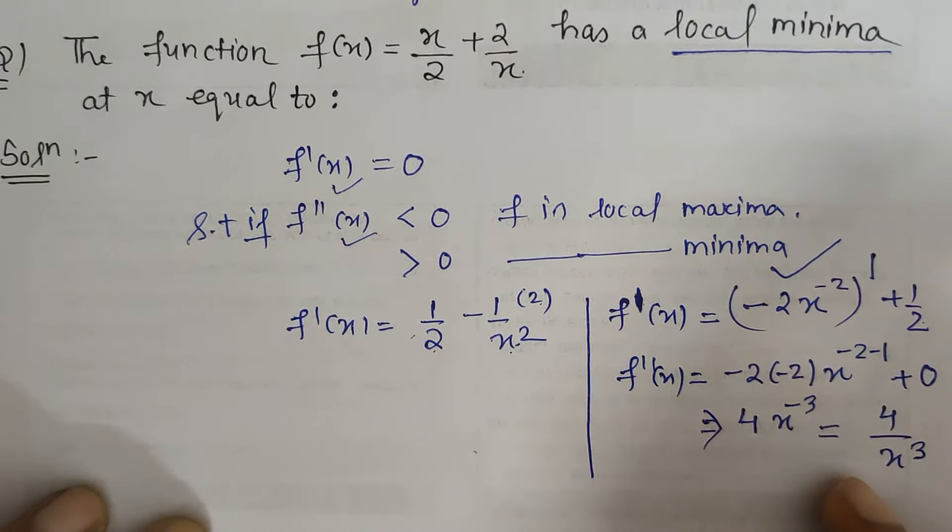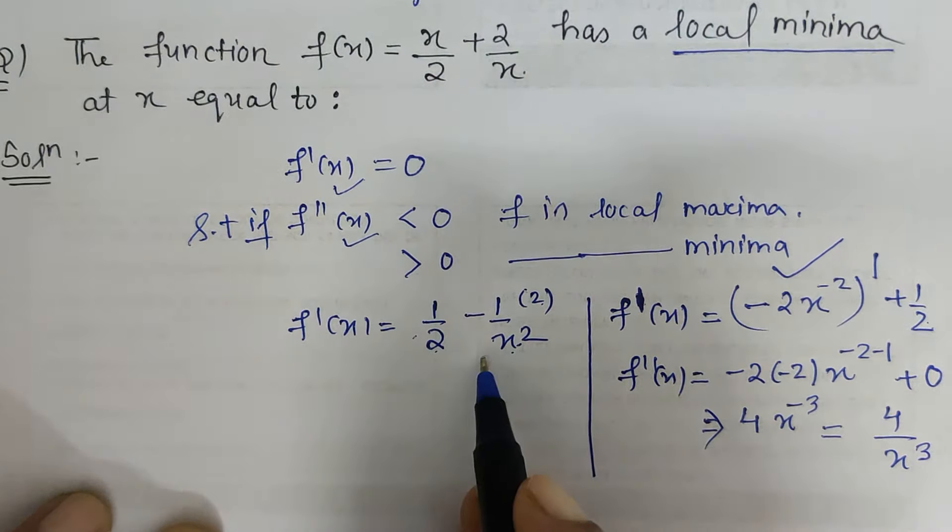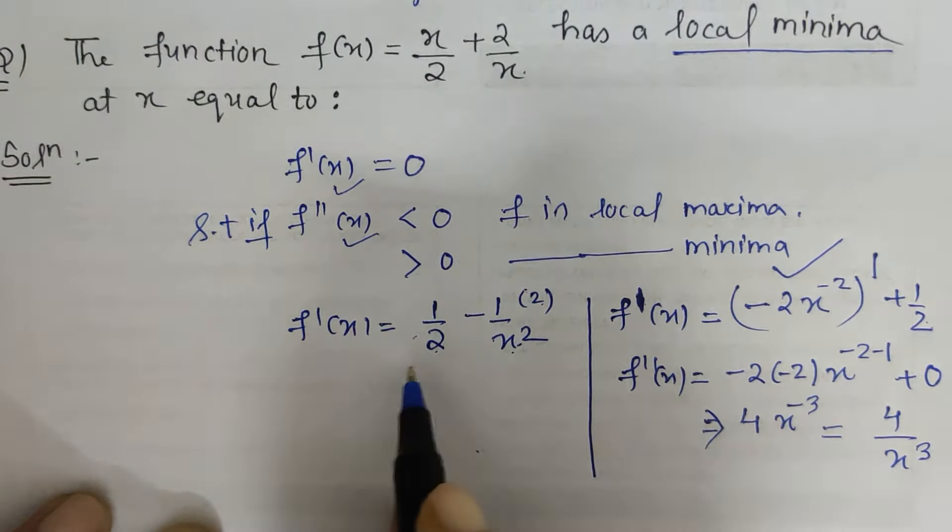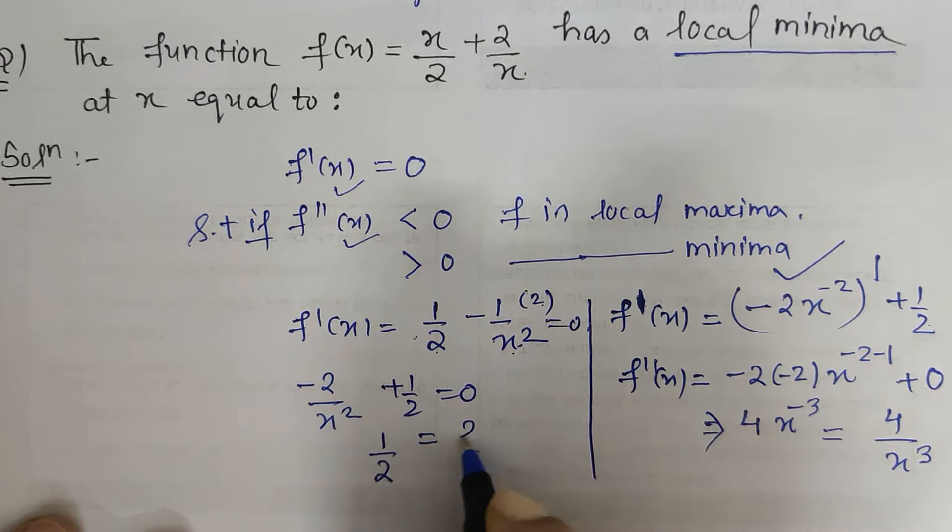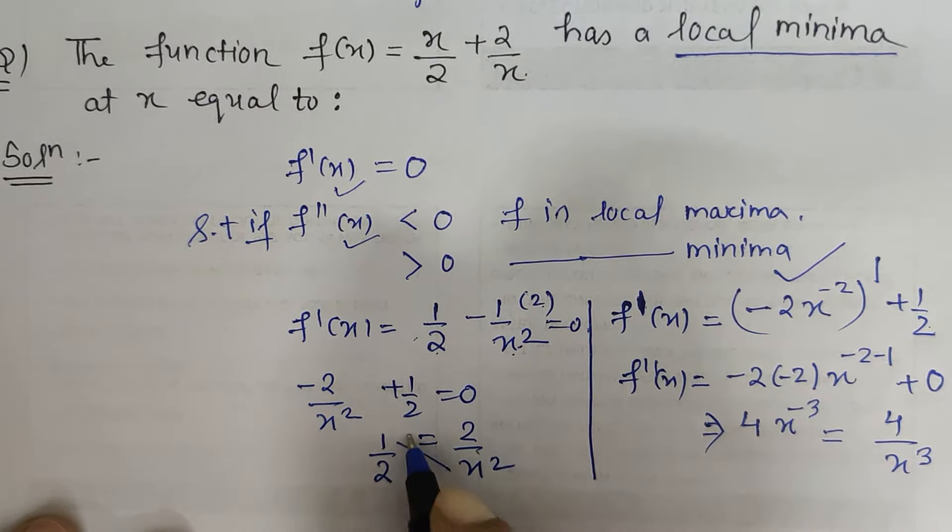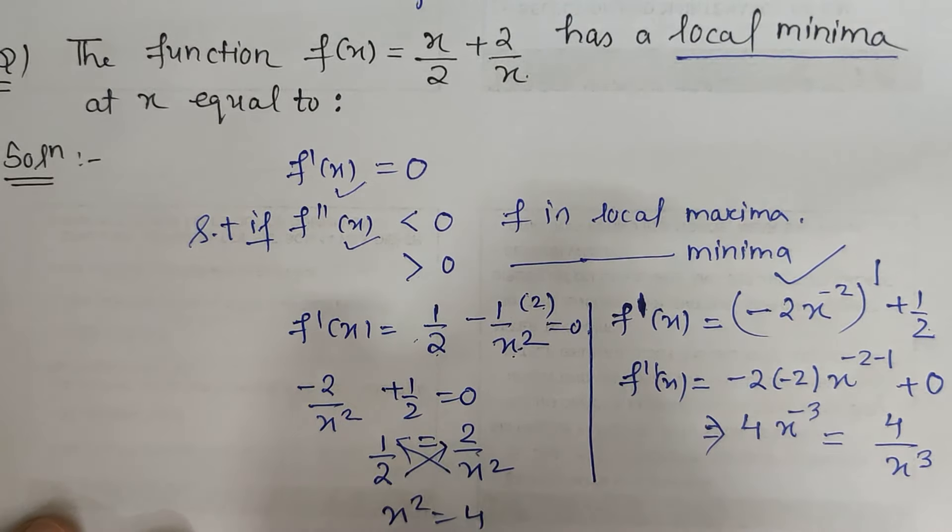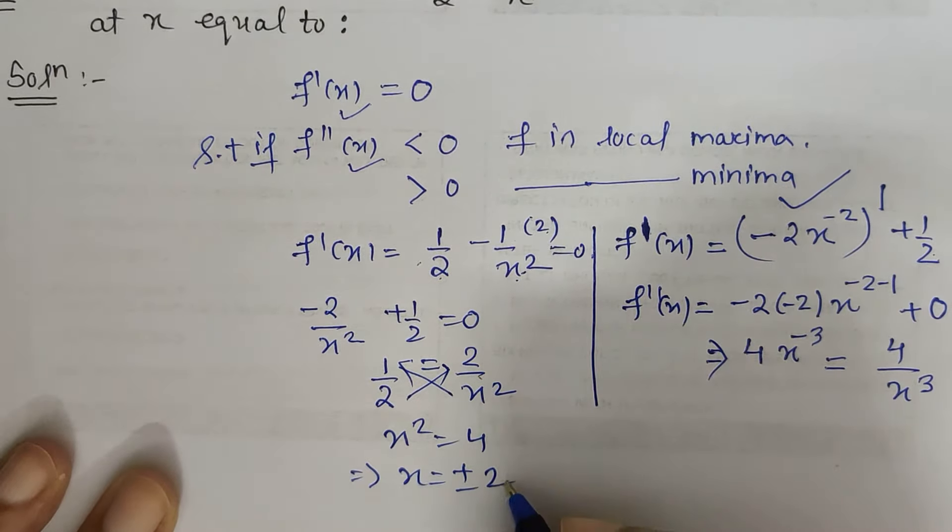My second derivative is 4/x³. From here, as per the first condition, I have to find the critical point. Let's compare this with 0. I get -2/x² + 1/2 = 0, or 1/2 = 2/x². Cross multiplying, I get x² = 4, which gives us x = ±2. So I have two critical points: +2 and -2.